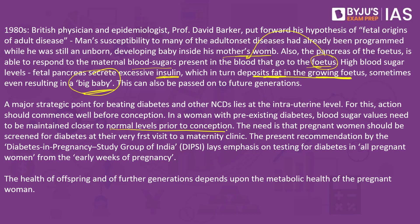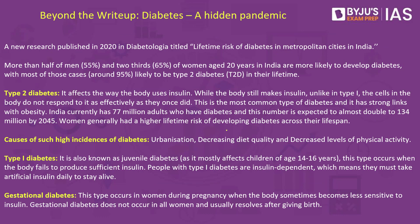India is regarded as the diabetes capital of the world because of the very large number of cases found here. In 2020, a research report titled 'Lifetime Risk of Diabetes in Metropolitan Cities of India' was published. It found that more than 55% of men and about 65% of women aged 20 years in India are more likely to develop diabetes than people of the same age living outside India.